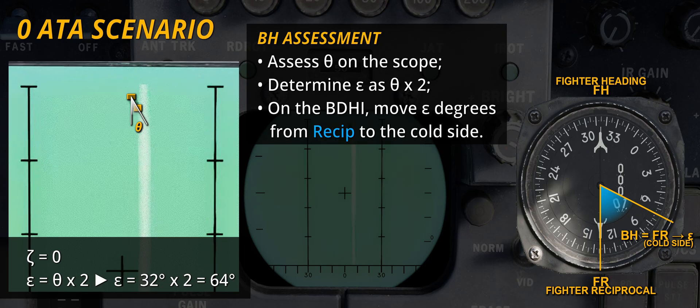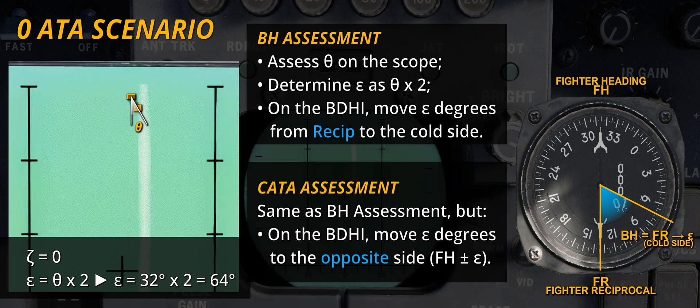The same routine described to calculate the bandit's heading at 0ATA is applied to determine the CATA. In the same manner, the drift angle is determined and doubled and computed using the B-DHI to get the desired value. This time, however, the direction is opposite the bandit's heading.